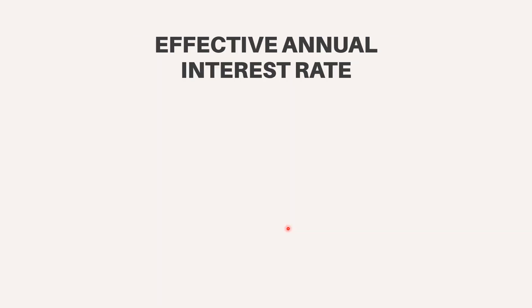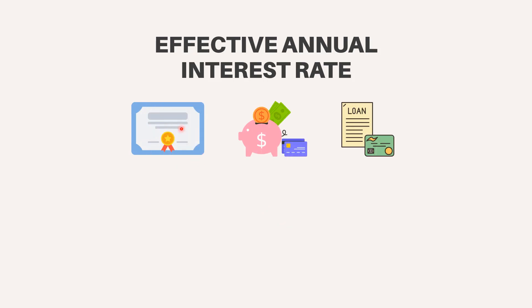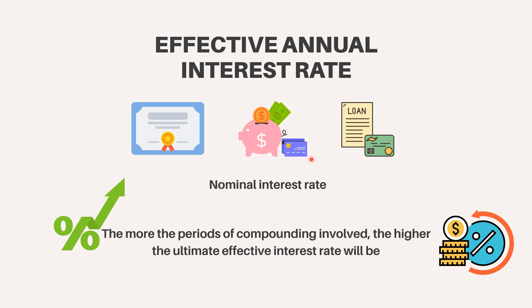What does the effective annual interest rate tell you? A certificate of deposit, a savings account, or a loan offer may be advertised with its nominal interest rate as well as its effective annual interest rate. The nominal interest rate does not reflect the effects of compounding interest or even the fees that come with these financial products — the effective annual interest rate is the real return. Banks and other financial institutions typically advertise their money market rates using the nominal interest rate, which does not take fees or compounding into account. The effective annual interest rate does take compounding into account and results in a higher rate than the nominal. The more the periods of compounding involved, the higher the ultimate effective interest rate will be.